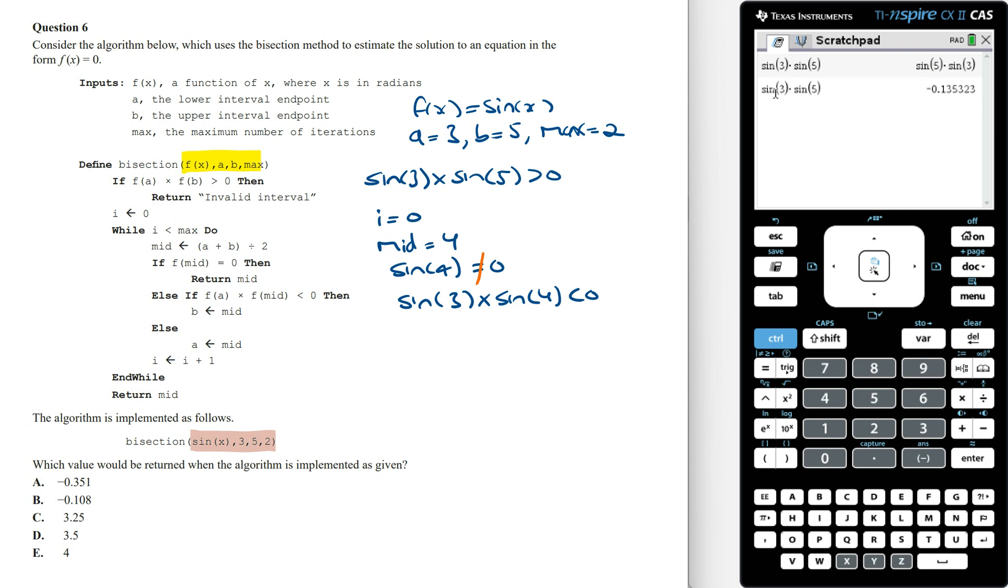Using the calculator, this is less than 0, so this means the value of b is going to equal 4. Now going to the next step, i is now going to equal the previous i plus 1, so this is going to equal 0 plus 1, which is just 1.